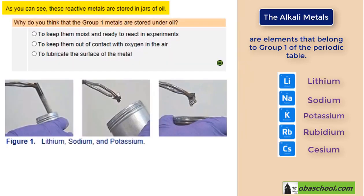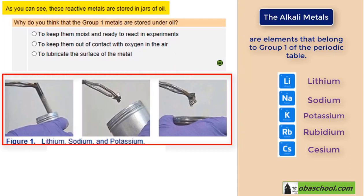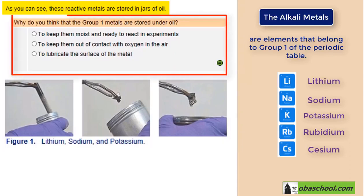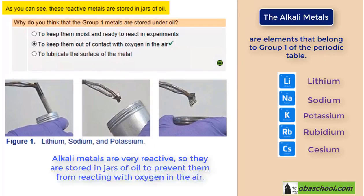As you can see, these reactive metals are stored in jars of oil. Why do you think that is? The correct answer is: to keep them out of contact with oxygen in the air.